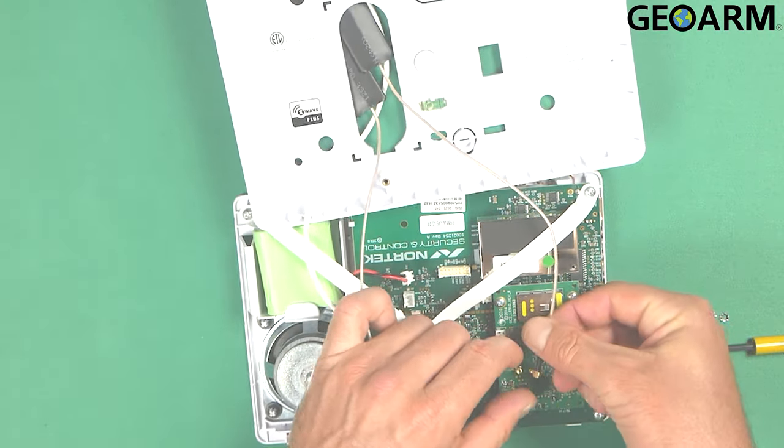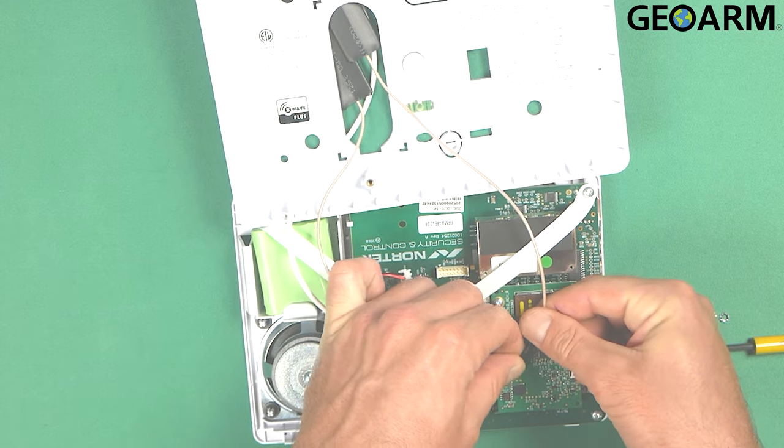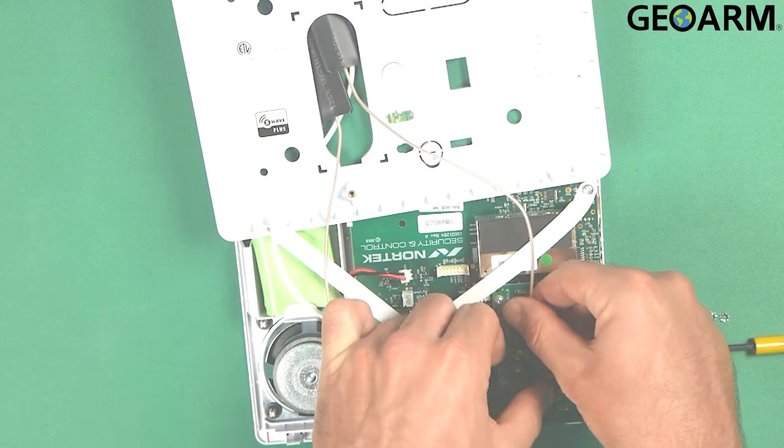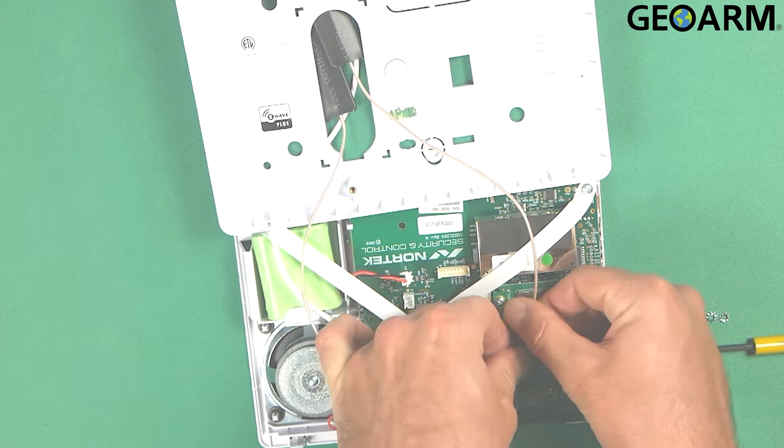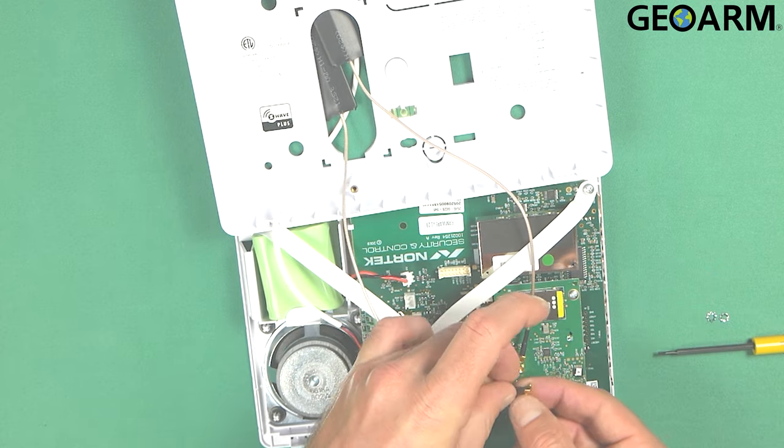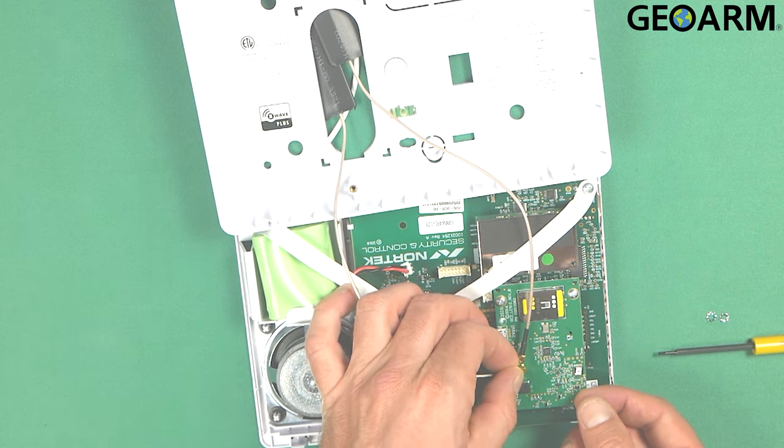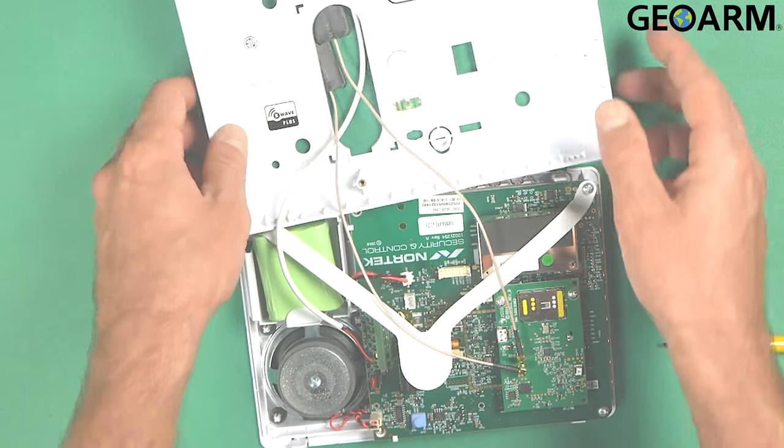So the connections for the antennas go right here, so you'd go one here, push it down and get it clicked in place, and then do the same thing with the other one. Once those are clicked in place, then what you're going to do is go ahead and get it secured back to the back plate.